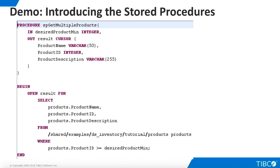Finally, we have a procedure called GetMultipleProducts, which makes a small modification to the LookupProduct feature. Like LookupProduct, it accepts a product ID as an input parameter and returns a cursor output. However, we have changed the WHERE clause so that the output cursor will contain multiple rows.